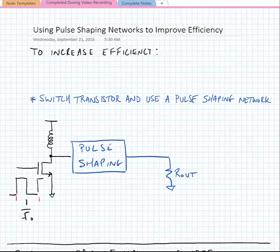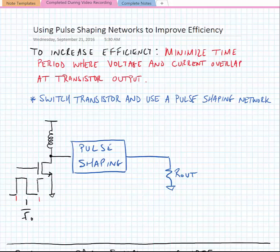So how are we going to try and increase the efficiency, or the average efficiency, or both? We're going to minimize the time period where voltage and current overlap at the transistor output. With the class B amplifier we did this by biasing the transistor just at the edge of cutoff so it only turns on for part of the input wave cycle. With a class E amplifier or any switching amplifier, we switch the transistor and use a pulse shaping network to minimize the overlap between the voltage and current.